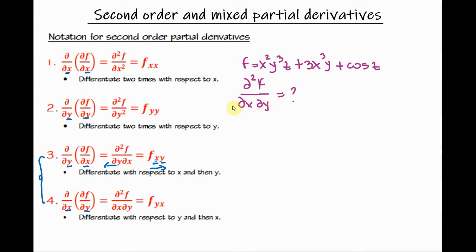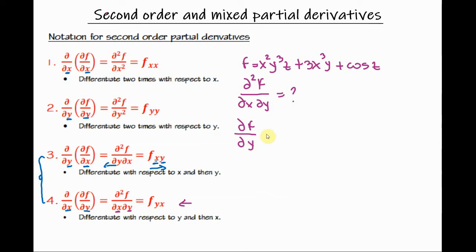Let's recall our formula from earlier. We will first differentiate with respect to y and then with respect to x, as per the formula, so the order goes from right to left. When differentiating with respect to y, that means we treat x and z as constants. So we compute the partial derivative of the function with respect to y.